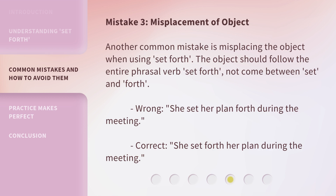Mistake 3: Misplacement of Object. Another common mistake is misplacing the object when using Set Forth. The object should follow the entire phrasal verb Set Forth, not come between Set and Forth. Wrong: 'She set her plan forth during the meeting.' Correct: 'She set forth her plan during the meeting.'